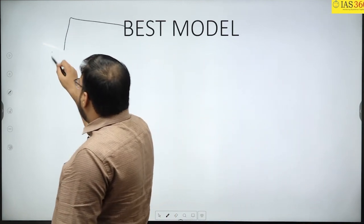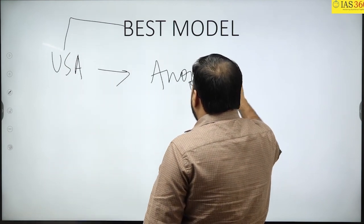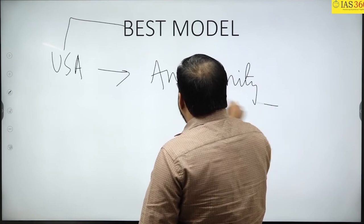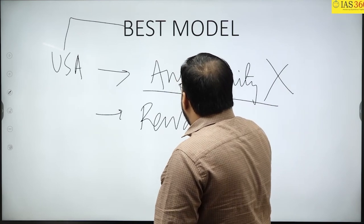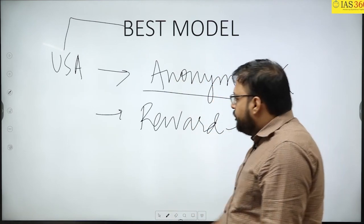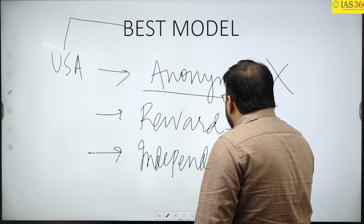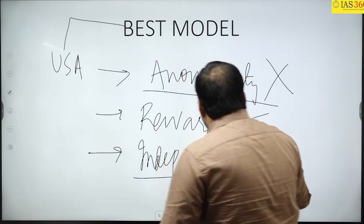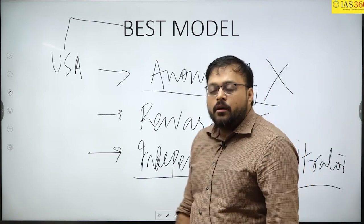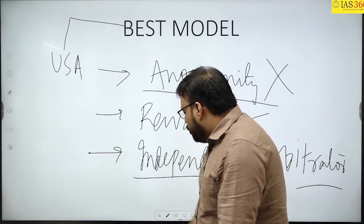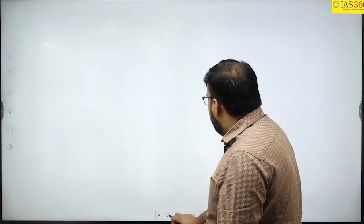Now, the best model in the world — the USA model. In the USA, there is no concept of mandatory identity disclosure. They have the idea of giving rewards to the whistleblower. Third, there is an independent arbitrator who investigates the complaint, rather than a competent authority who may have conflicts of interest. This is the best model in the world.